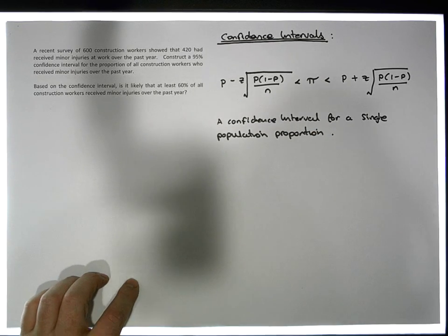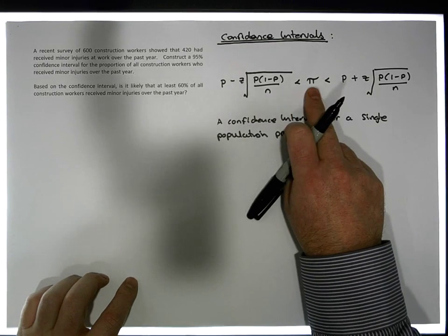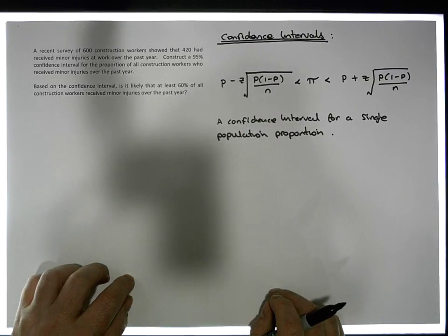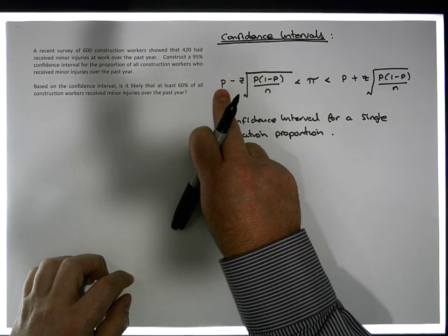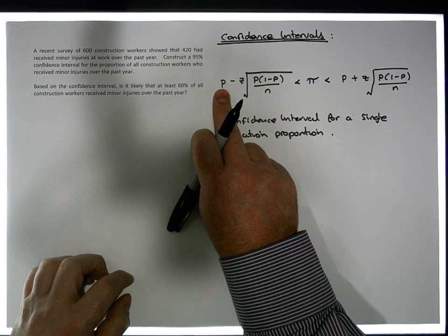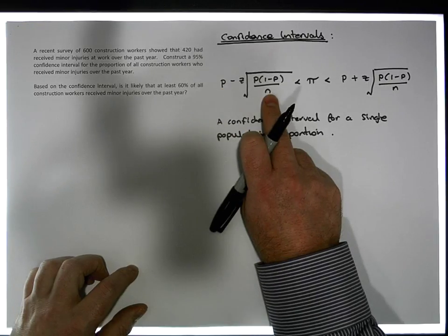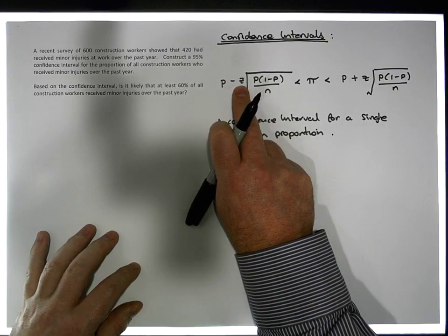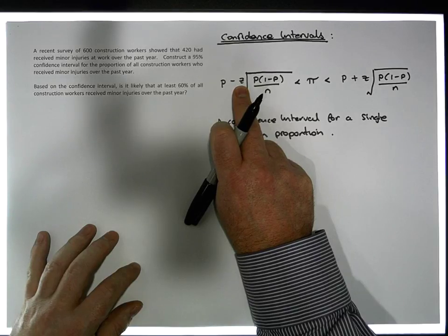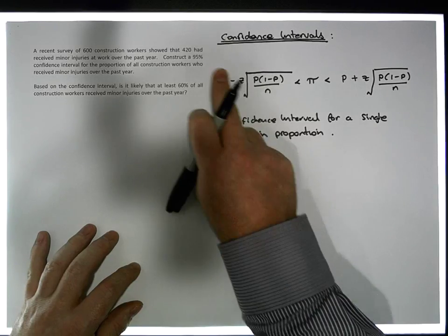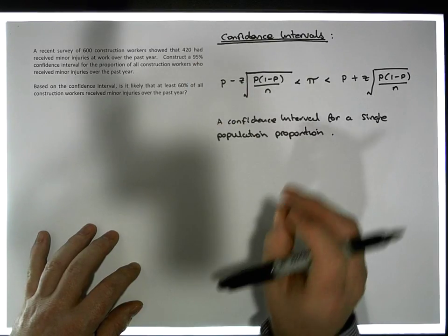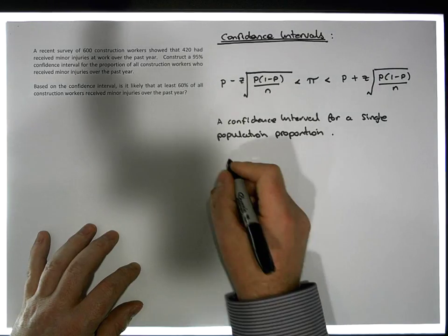To calculate this particular interval, there are three pieces of information required: first, we need p — the proportion of the sample that have the condition; second, we need n, the sample size; and third, we need the appropriate z statistic or z score that goes along with a 95% confidence interval.